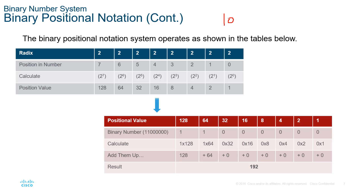So if we have a binary number like 1001, the far right is our 1 position, then 2, then 4, then 8. We basically add up where the 1s are — we'd add 8 plus 1, which gives us 9. Looking at our 8-bit octet with positional values 1 through 128: if we have 11000000, we only add where the 1s are. We have 1 in the 128 position and 1 in the 64 position — 128 plus 64 is 192. That is our decimal conversion from binary.